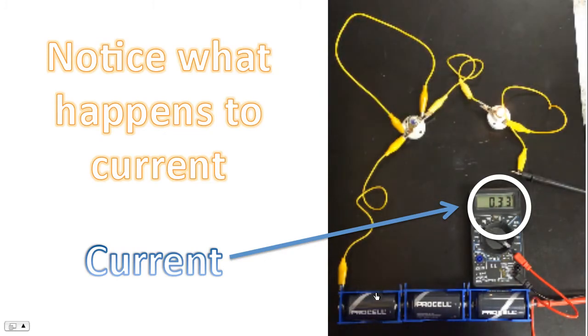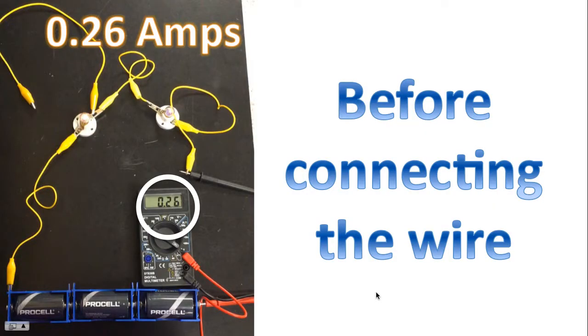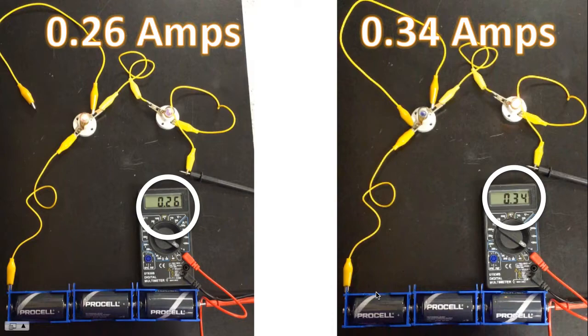Hmm, clearly the current has risen. So prior to connecting the wire, the current was 0.26 amps. This was the current traveling throughout this entire circuit, the current that was leaving the battery. After connecting the wire, the current increased to 0.34 amps.